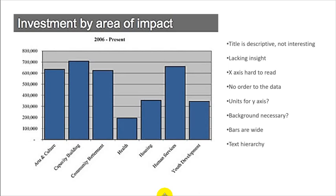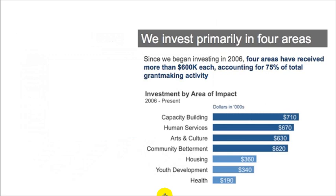The original title is descriptive but the x-axis is hard to read because it's tipped, there's no order to the data, y-axis units are missing, background marks are present, bars are too wide, and text hierarchy is weak. The reworked version reads: 'We invest primarily in four areas' with a subtitle: 'Since we began investing in 2006, four areas have received more than $600,000 each, accounting for 75% of total grant-making activity.' Same data, but with great units, organization, highlighting, a subset emphasized, direct labels, no unnecessary axes — clean storytelling.